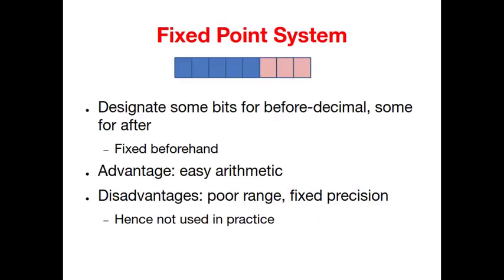To reflect the above scheme, we can have a simple system which goes by the name of fixed point system where the location of the decimal is pre-decided. So in this example, we have 8 bits overall to represent a number with the first 5 bits for the integer part and the next 3 bits for the fractional part.